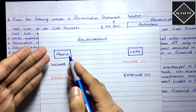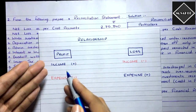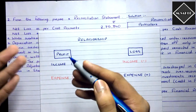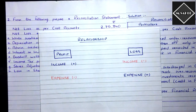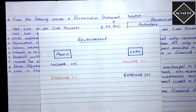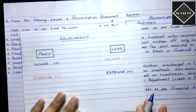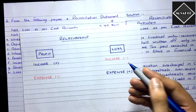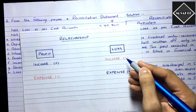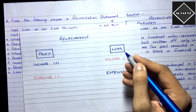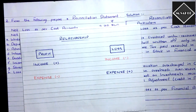Now the relationship: profit and income are positively related — when income increases, profit increases. When expense increases, profit decreases. And for loss: loss and income are negatively related — when income increases, your loss decreases. When expense increases, your loss increases. Simple common sense.